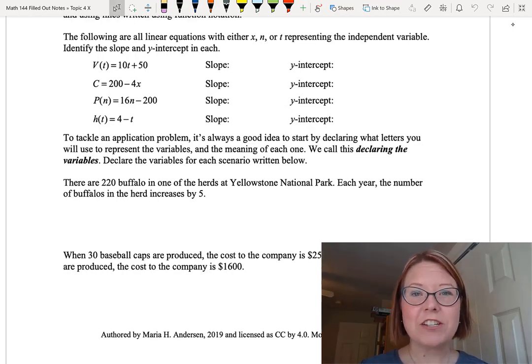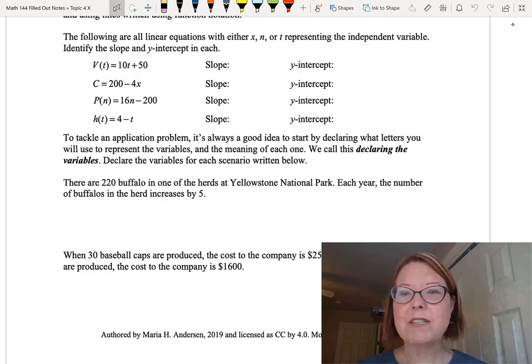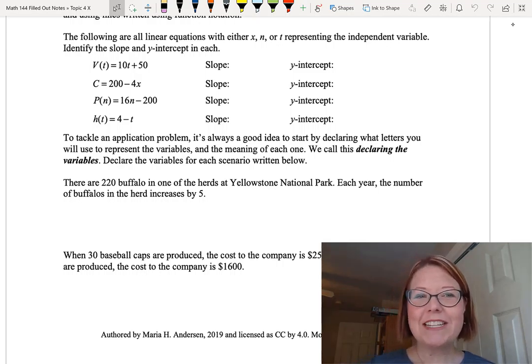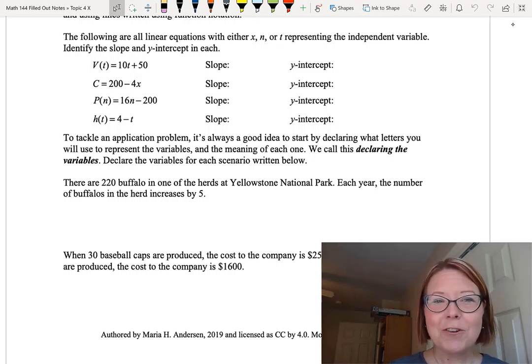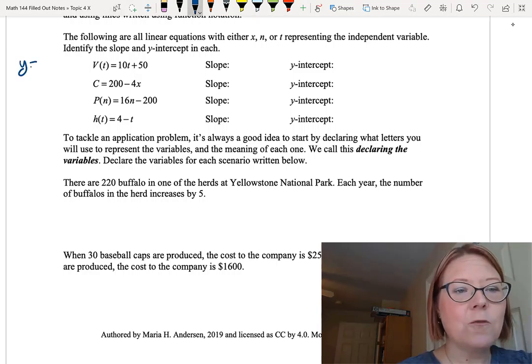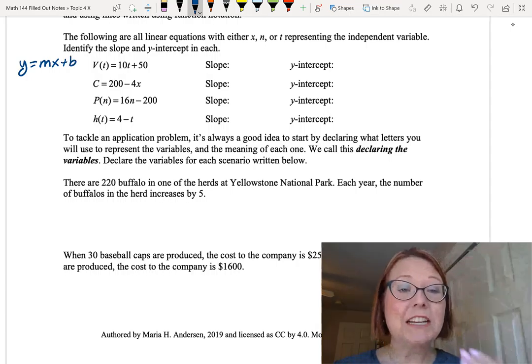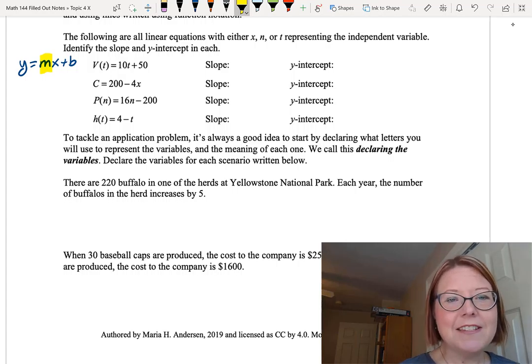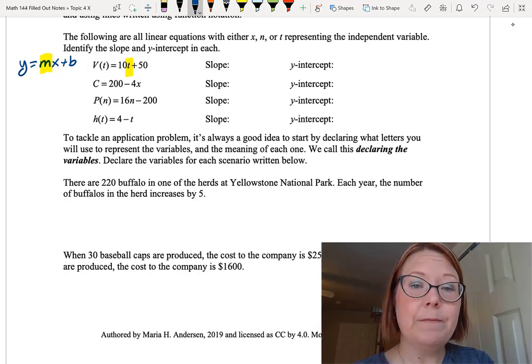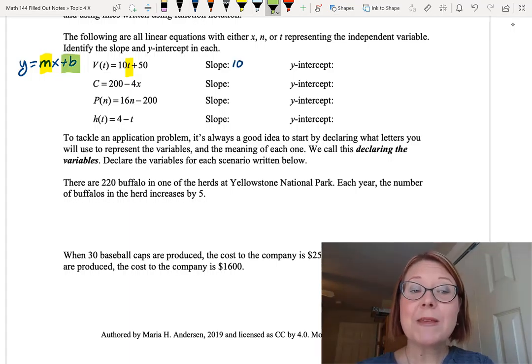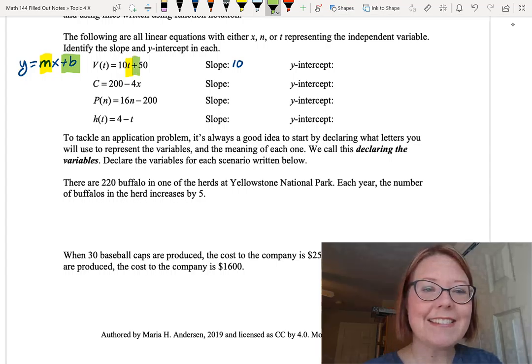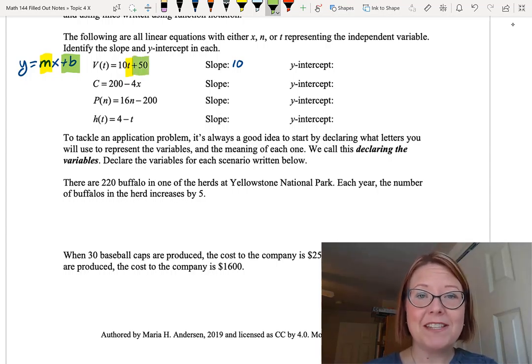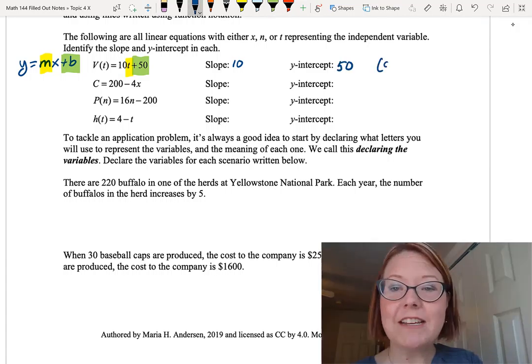I have four equations written with x, n, or t representing the independent variable. For each equation we're going to identify the slope and the y-intercept. The first equation is v of t equals 10t plus 50. Now we're used to seeing the form y equals mx plus b, and we identify the slope as m. The slope is simply the number in front of that independent variable. In this case the independent variable is t, so the slope is going to be the number in front of t, or 10. The y-intercept is the number that's separate from the variable term. In this case the plus 50 is the number separate from the t term, and so that's our y-intercept, 0, 50.